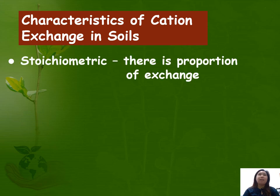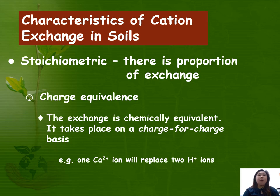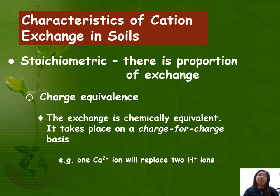Another characteristic is that it is stoichiometric, meaning there is a proportion of exchange. It is in consideration of charge equivalence, and the exchange is chemically equivalent — it takes place on a charge-for-charge basis. For example, one calcium ion will replace two hydrogen ions. One magnesium ion (Mg²⁺) will replace two hydrogen ions (H⁺).